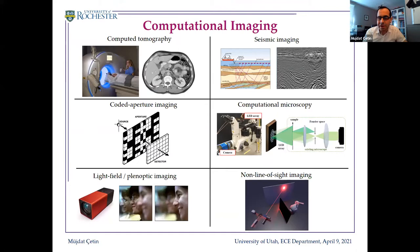Computational imaging has a variety of applications. There are mature imaging modalities such as seismic imaging or computed tomography, recent areas such as computational microscopy or coded aperture imaging, and emerging modalities like light field imaging and non-line-of-sight imaging. In all of these, you measure some data from a sensor, and the goal is to find some underlying image using computation and algorithms.